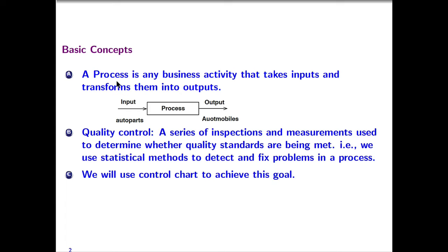A. A process. A process is any business activity that takes inputs and transforms them into output. You have input, and after a process, you are going to have output. For example, the input is auto parts, and after a process, the output is automobiles.